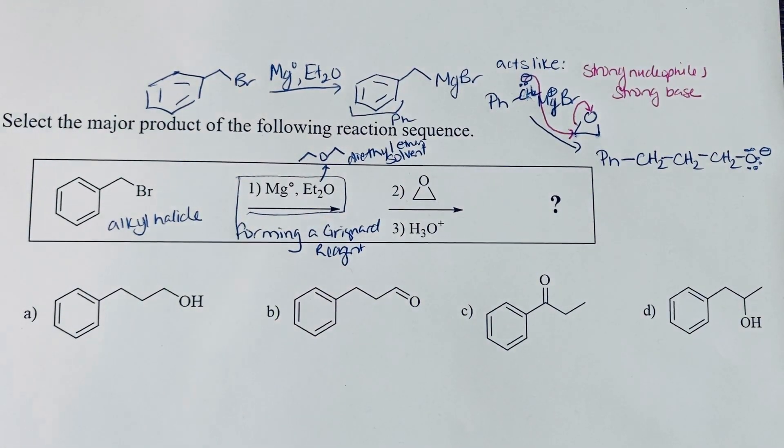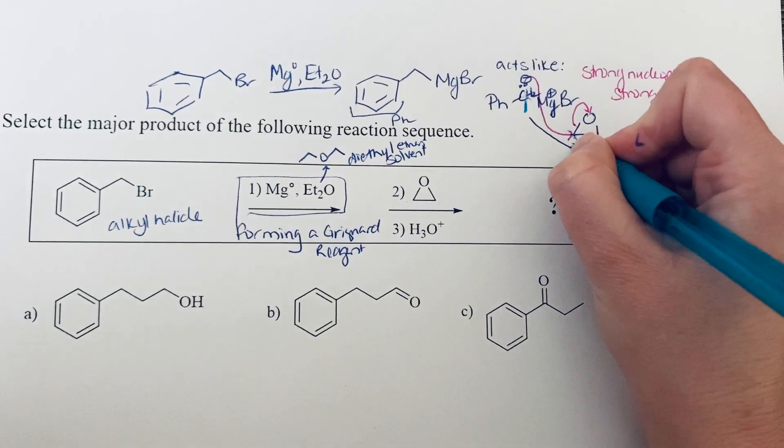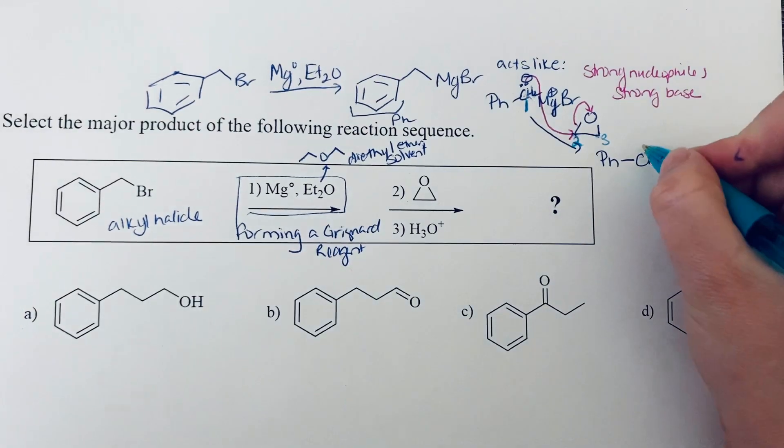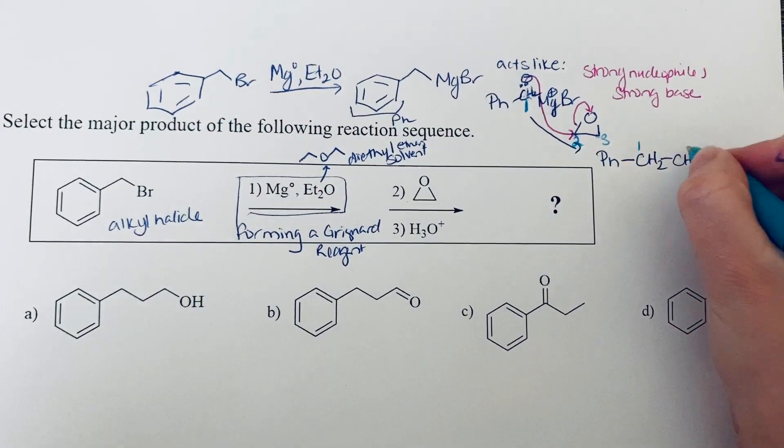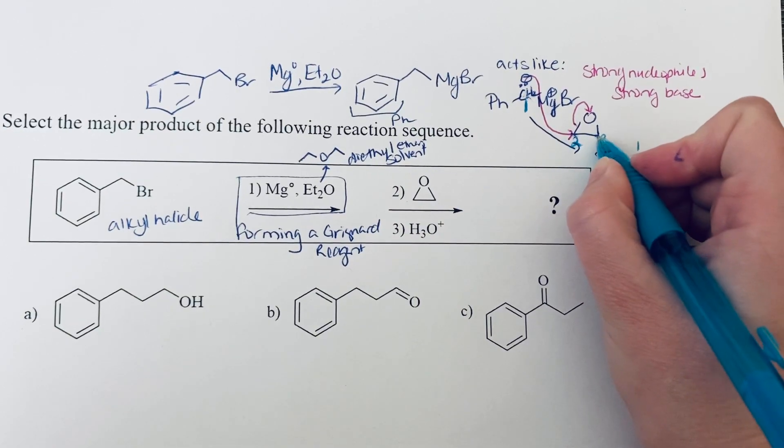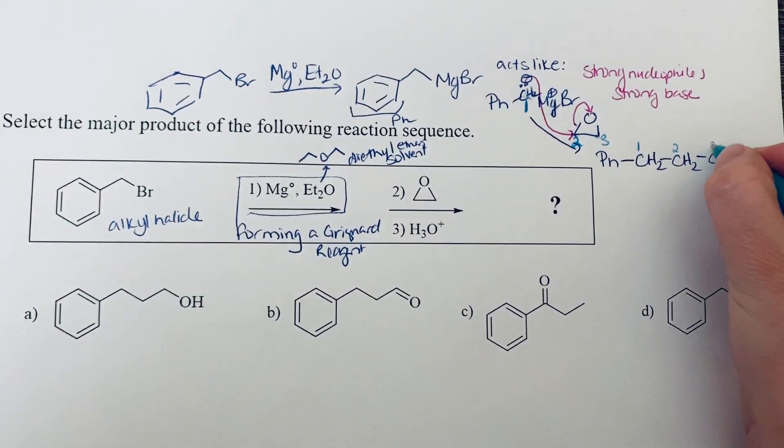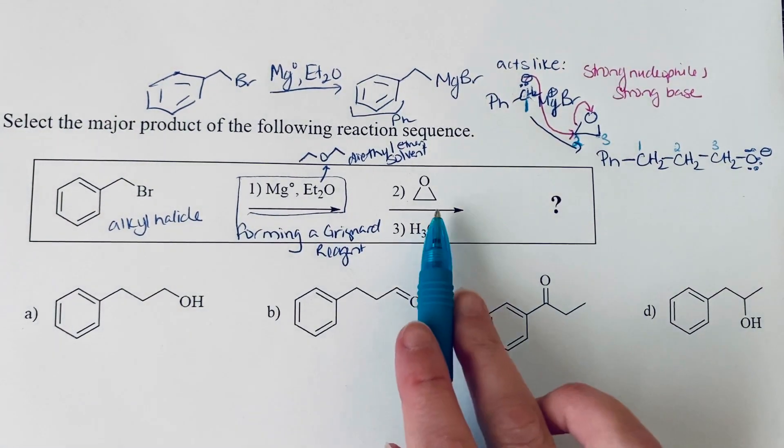So I'm going to number these carbon atoms. I'm going to put number one at my carbanion, and number two where it attacked on the epoxide, and then carbon three. So we can see that there's carbon one. We formed a bond to carbon two, which is a CH2, and then carbon three, which is also a CH2, and that's the carbon that still has a bond to oxygen. And so this would be the structure that we formed after that second step.